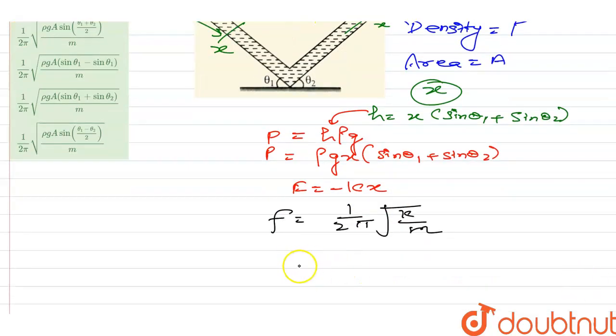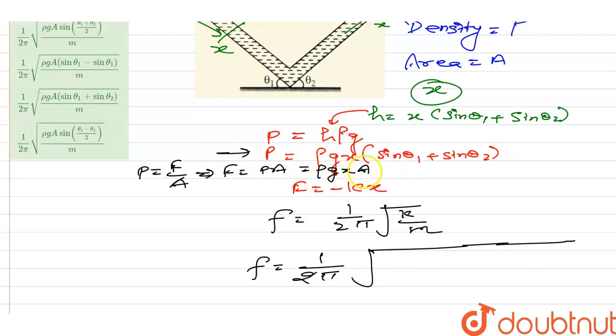Now, what about k? Put the value of k in this equation. We know that pressure equals force upon area, and force equals pressure times area. The pressure is this, so the force will be ρgx × A(sin θ₁ + sin θ₂). Consider this is equation 1, and this is equation 2. Now compare these two equations.